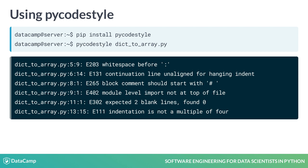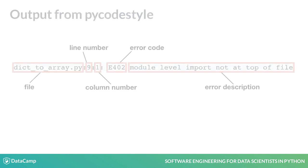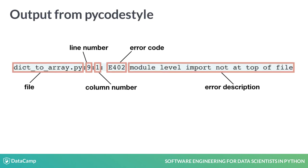Note that the output we see on this slide has been truncated. The output shows us the exact location of any violations by showing the file name, line number, and column number where the problem occurred. Note that the output does not use zero-based indexing.